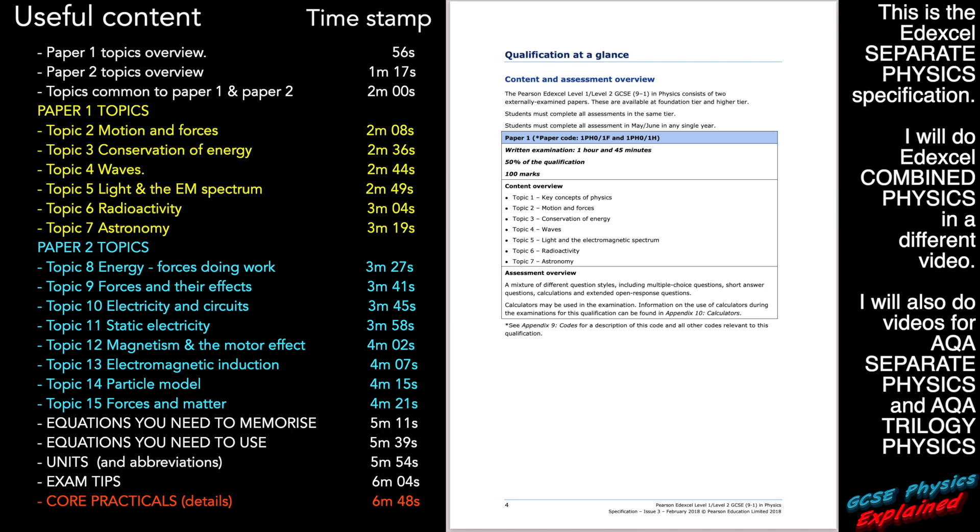Right, that gives you an idea of what you're supposed to learn for paper one. All the different topics here, this is what you should be learning. That paper is on for one hour and 45 minutes and it's 50% of your qualification and it'll be worth 100 marks.